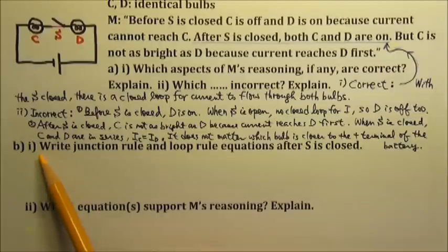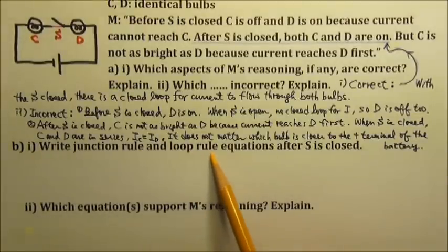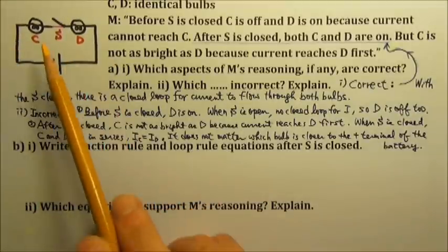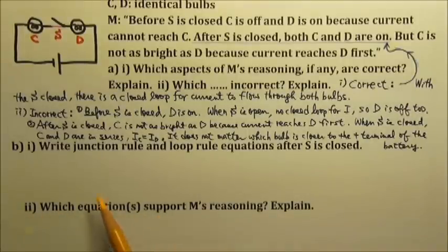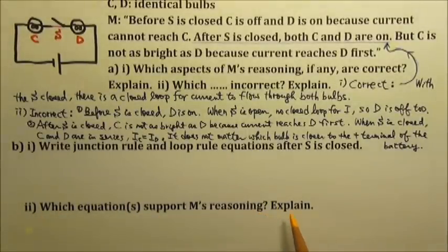Part B1: Write junction rule and loop rule equations for this circuit after the switch is closed. Part B2: Which of these equations support Student M's reasoning? Explain how the equations provide support.